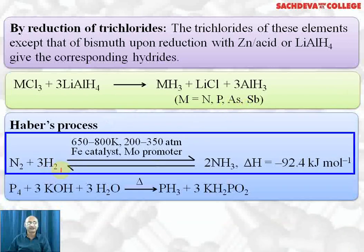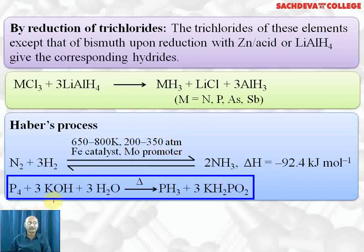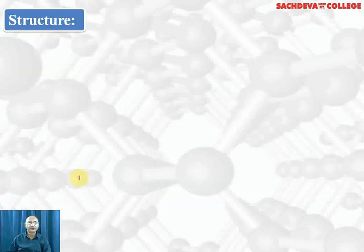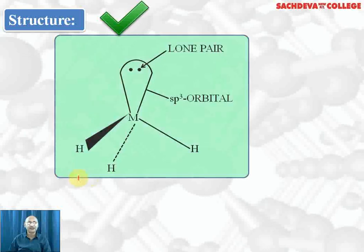Haber's process: nitrogen reacts with hydrogen to form ammonia. The reaction takes place at 650 to 800 Kelvin under 200 to 350 atmospheric pressure. Iron acts as catalyst and molybdenum is the promoter. The reaction is exothermic. Phosphorus reacts with 3 moles of KOH in water; on heating it gives phosphine plus potassium hydrogen phosphite.